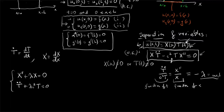And the function T must satisfy the ODE T double dot plus lambda c squared T equals 0. The first ODE is satisfied for x between 0 and L, and the second for t greater than 0.